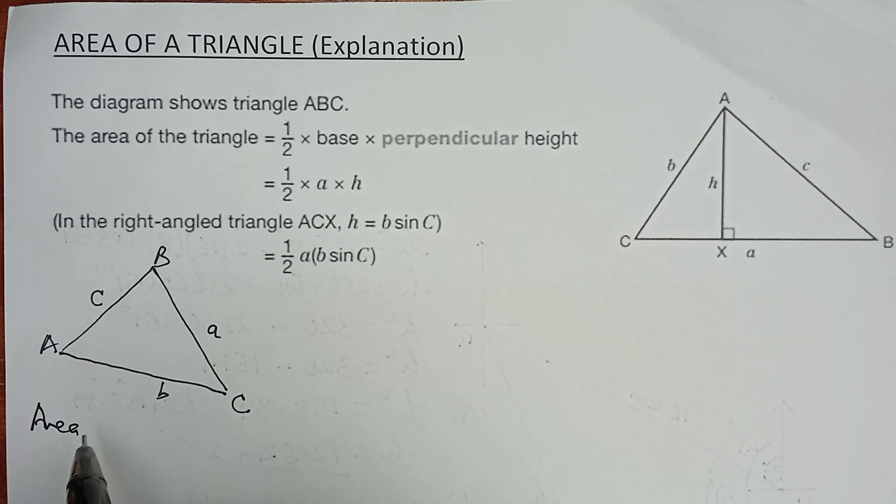The area of this triangle is given by a half times, if you are taking this side, A, B, a half A, B, the sine of the angle in between or included between the two sides. That is the area.